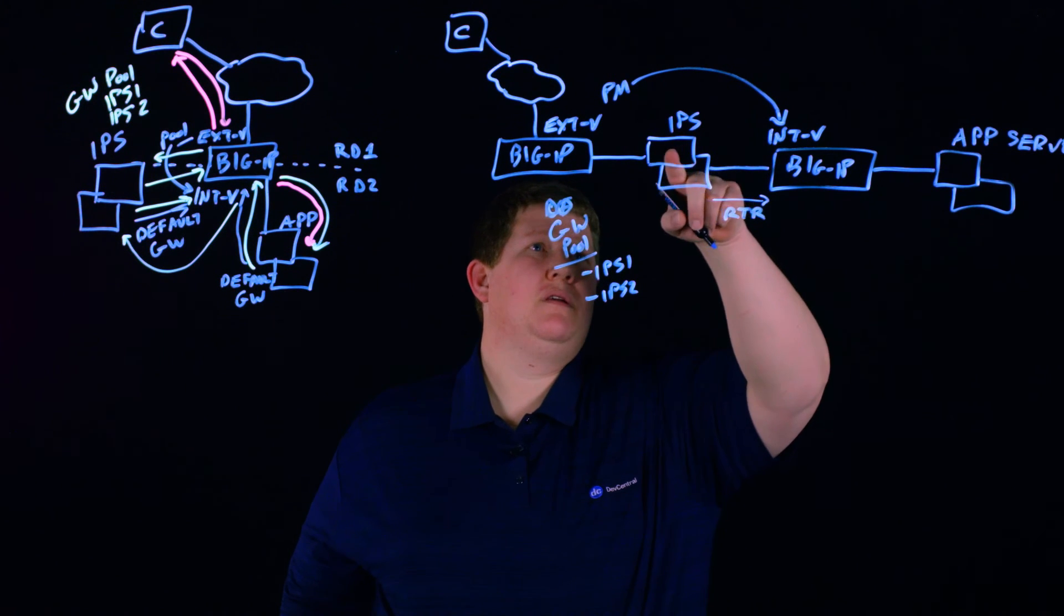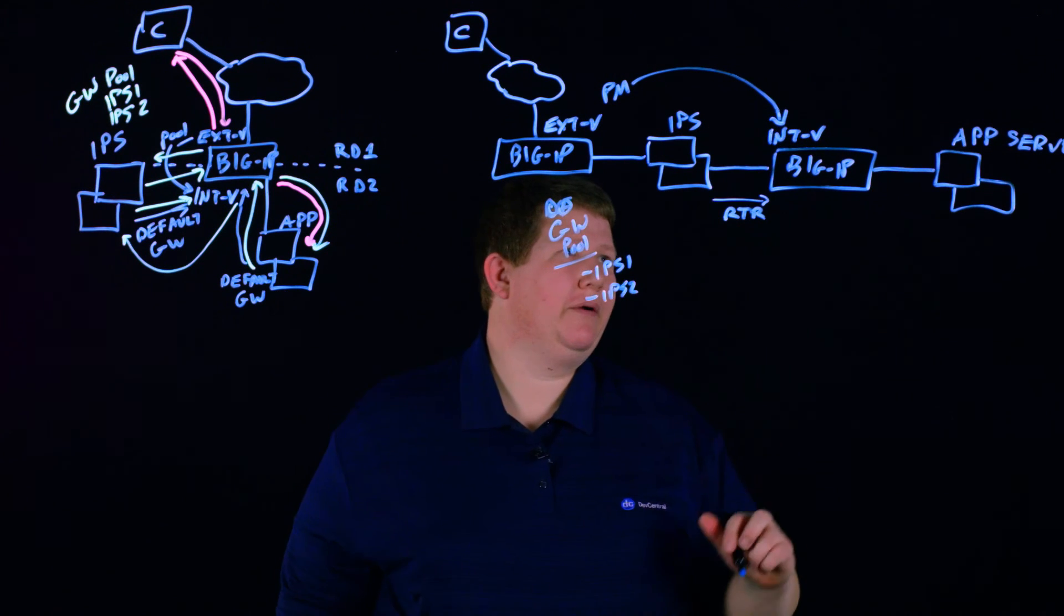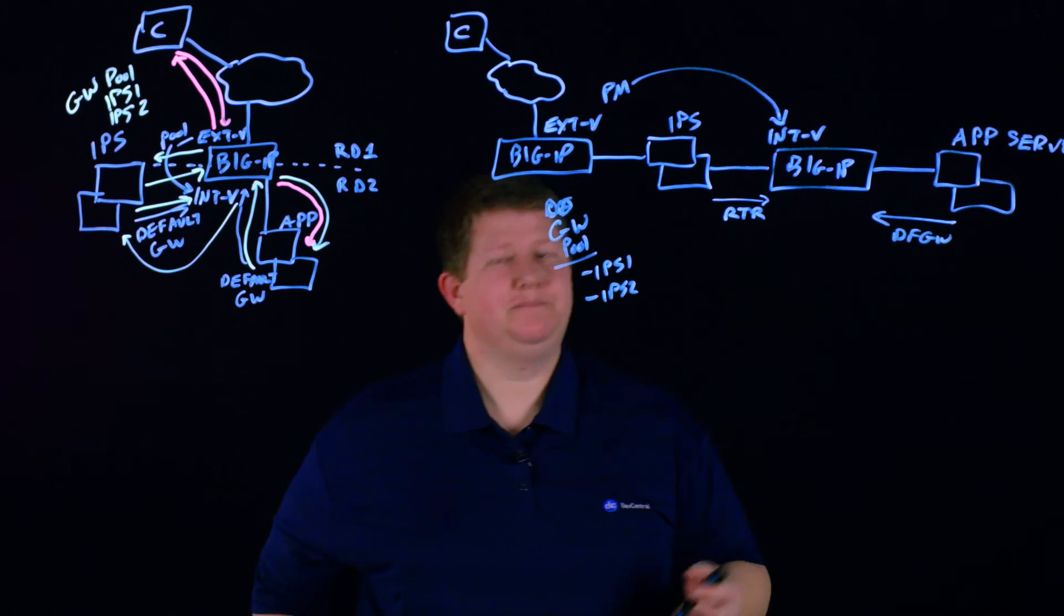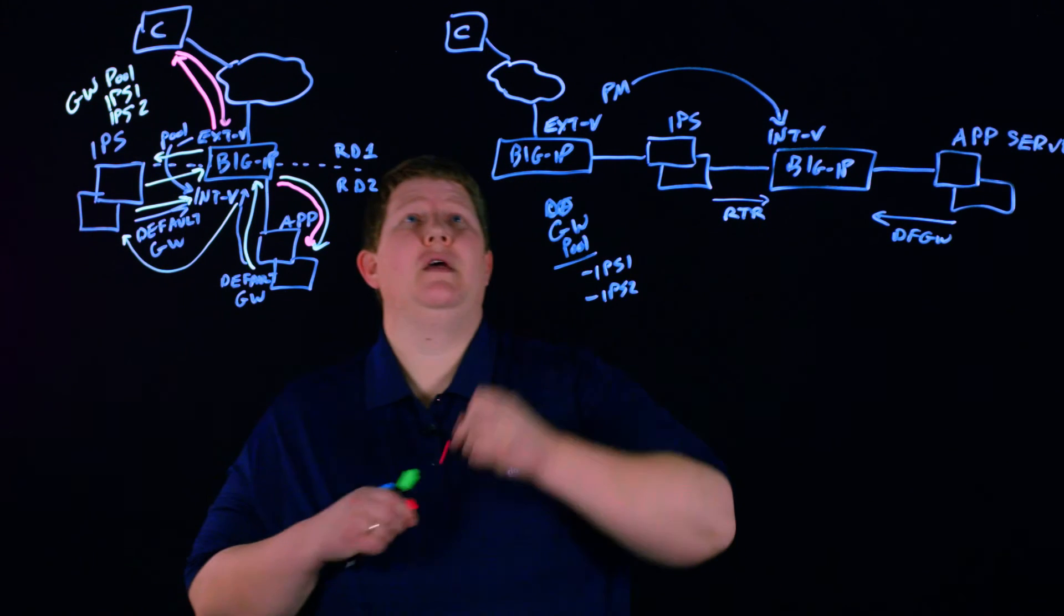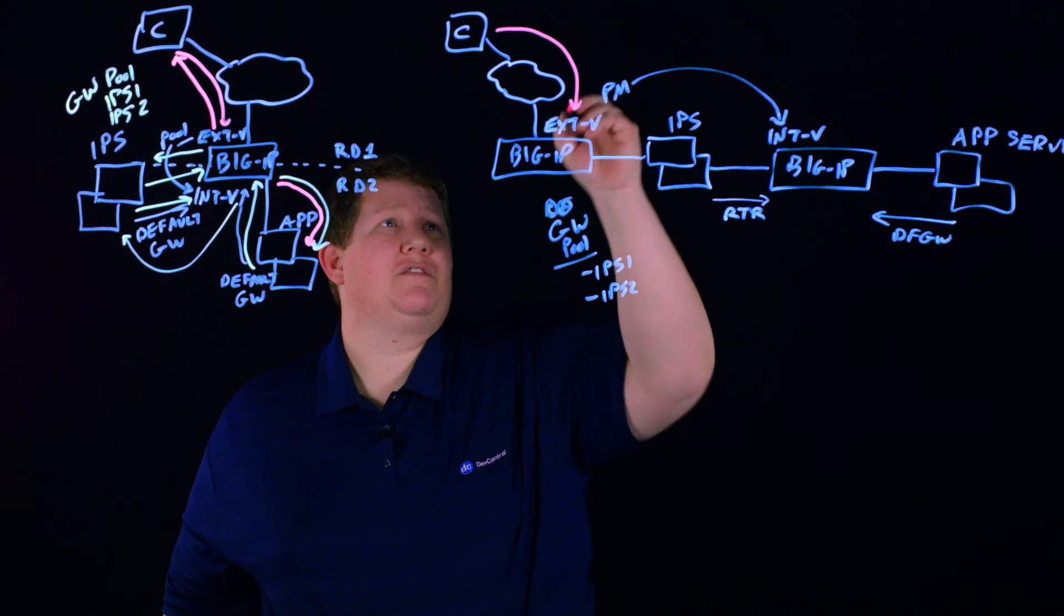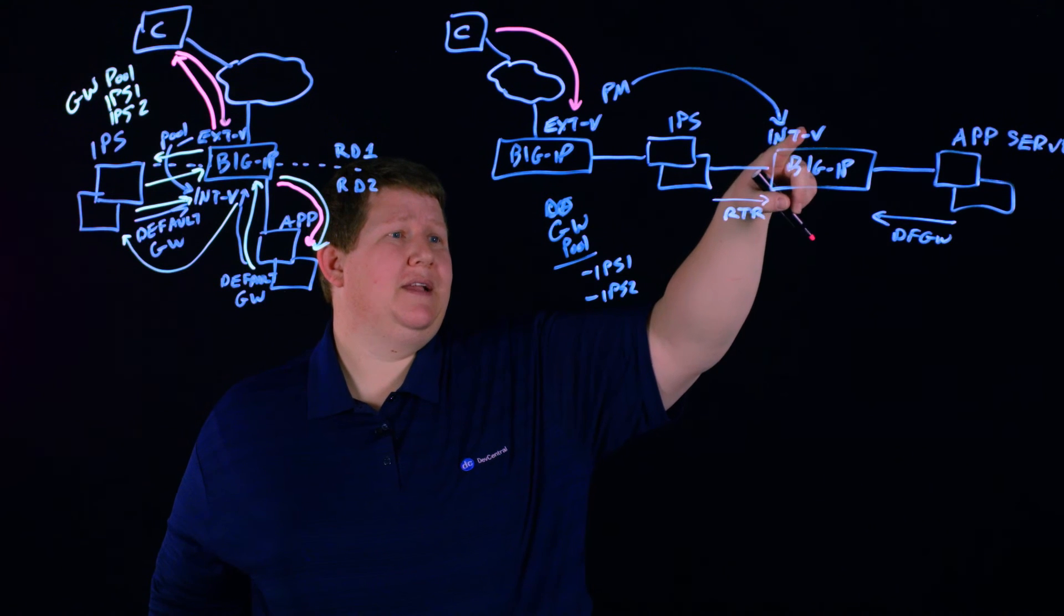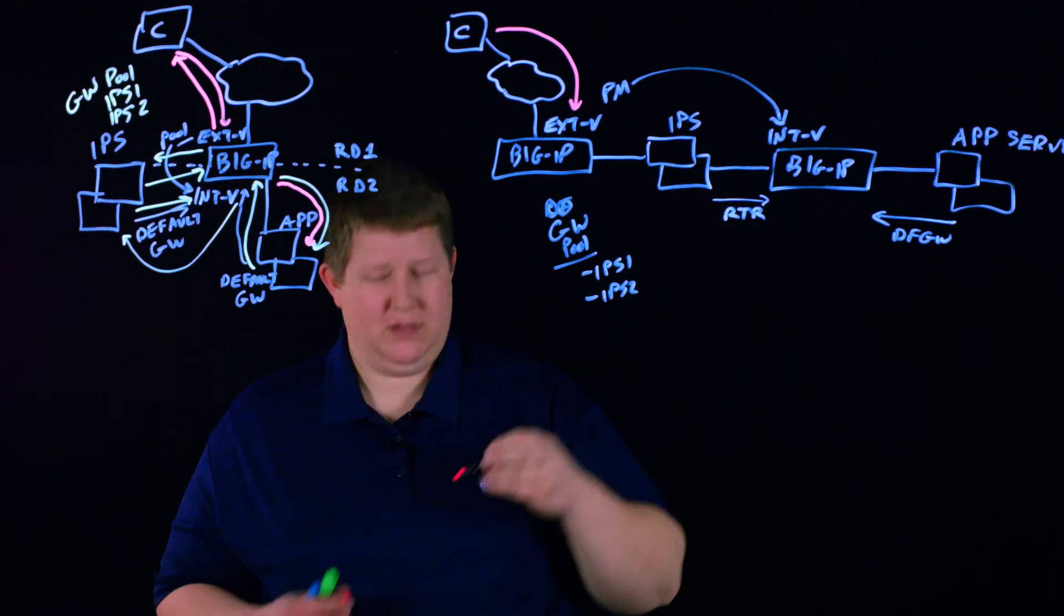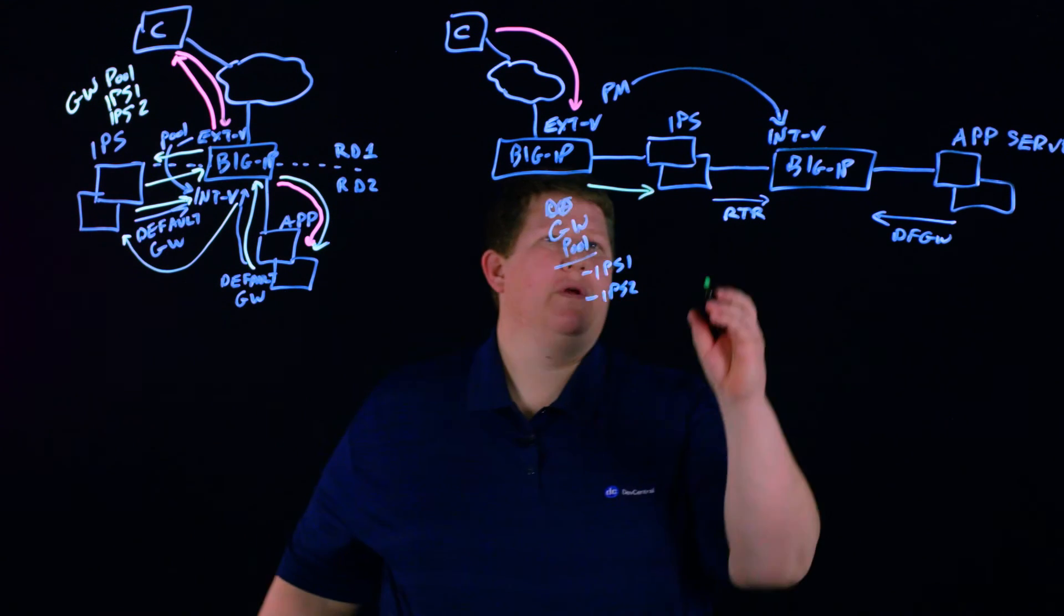These IPSs are packet forwarders—they're acting as a router. We'll have a default gateway of the BIG-IP. As traffic comes through here again, we have client hits this external VIP, external VIP has this pool member as the internal, but it's going to use this gateway pool to forward these to the IPS.